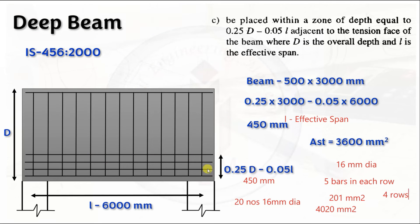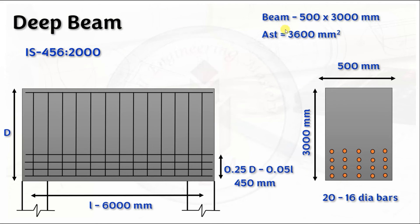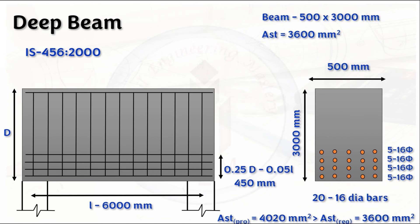Looking at the cross-section to get a clear idea: we have 4 rows, each row having 5 bars. The cross-section shows 500 mm width and 3000 mm overall depth. We have totally 20 numbers of 16 mm dia bars divided as 5 bars per row and 4 rows. Hence we can conclude that AST provided (4020 mm²) is greater than AST required (3600 mm²), so the design is satisfied. In this way you have to arrange the reinforcement details for deep beams.